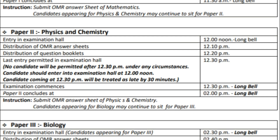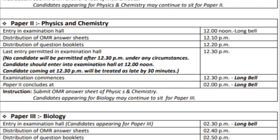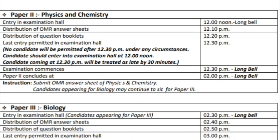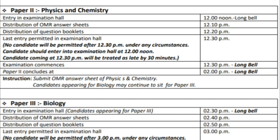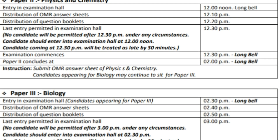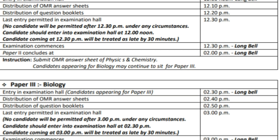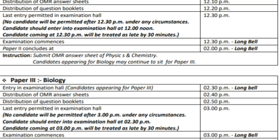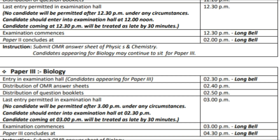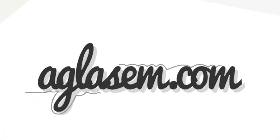MHTCET is a three-hour long offline exam conducted annually by DTE Maharashtra for admission to undergraduate engineering courses across Maharashtra. Paper one will be Mathematics and paper two will be Physics and Chemistry — you need to attend both papers to qualify. Seats will be allotted based on your performance. Best of luck for your exam! If you have any queries, feel free to comment below. Like, share, and subscribe — learn more and better with uglasum.com.